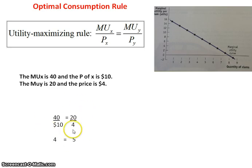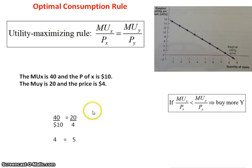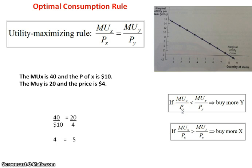Alternatively, for Y: if I have a ratio of 5, I need to bring it down to 4. The price is constant, so I need the marginal utility of Y to drop from 20 to 16. Since I'm moving down the marginal utility curve, that means consuming more of good Y — higher quantity lowers marginal utility. The rule to remember: if MU of X over price of X is less than MU of Y over price of Y, buy more of Y. If MU of X over price of X is greater than MU of Y over price of Y, buy more of X.